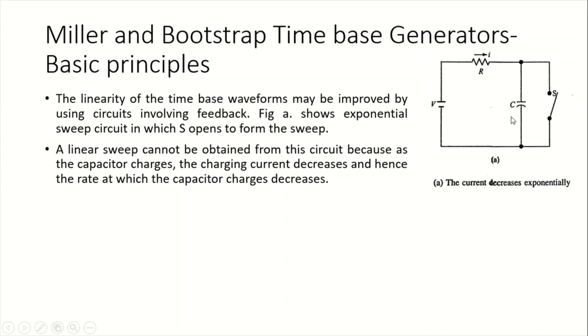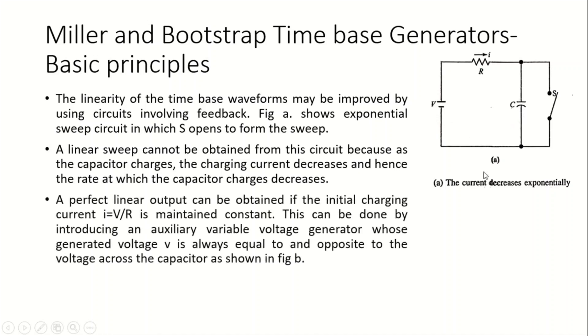A perfect linear output can be obtained if the initial charging current is maintained constant throughout the charging of the capacitance. This can be done by introducing an auxiliary variable voltage generator, a variable source whose voltage is always equal and opposite to the voltage developed across the capacitor.